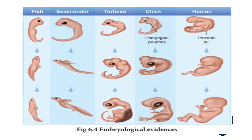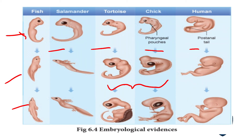Looking at the diagram, you can see the embryonic stages of fish, salamander, tortoise, chick, and human. More or less they resemble each other during embryonic development — the stages look the same across these different organisms. This shows the embryonic evidences for biological evolution.